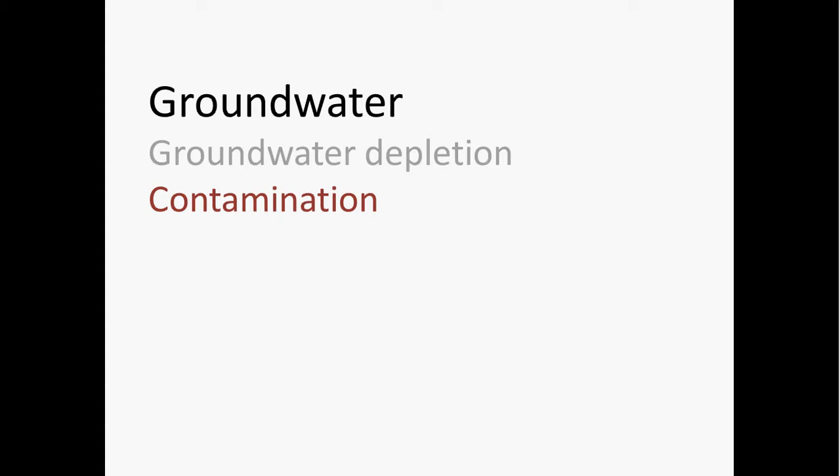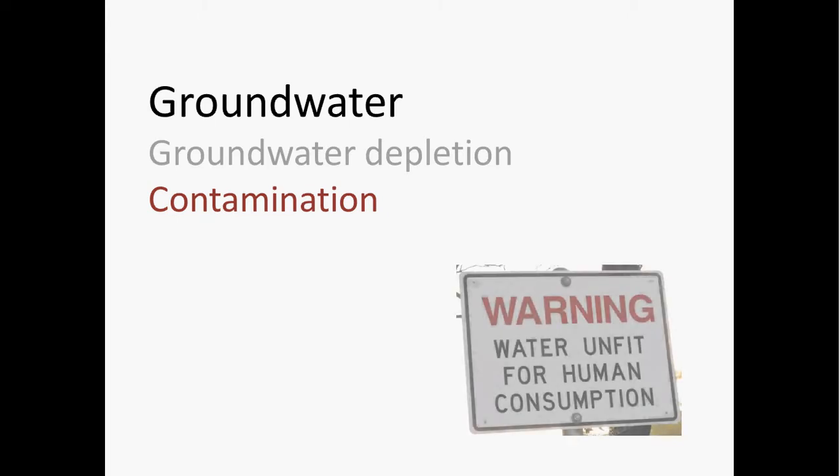Next we'll take a look at another kind of groundwater problem. Whereas the first problem we talked about relates to the amount of water available — the water quantity — here we're going to talk about water quality. Is the water safe to drink? Is it safe to use as irrigation water? It doesn't help to have a bunch of water if it's contaminated, so water quality and water quantity are very closely related and important topics.